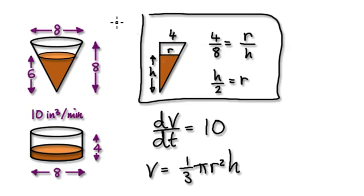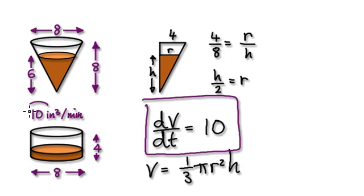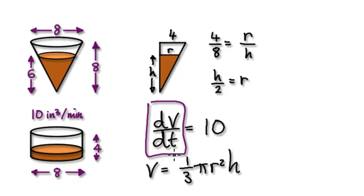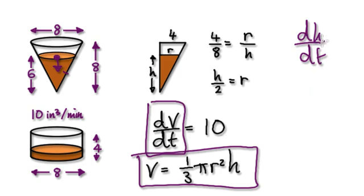This here is quite confusing, but let's try to understand what's going on. We've been given dv/dt, which is the change in volume over a period of time. Now we want to know dh/dt — we want to know the change in height. The thing that connects everything together is the volume. We've been given dv/dt and we want to know dh/dt.